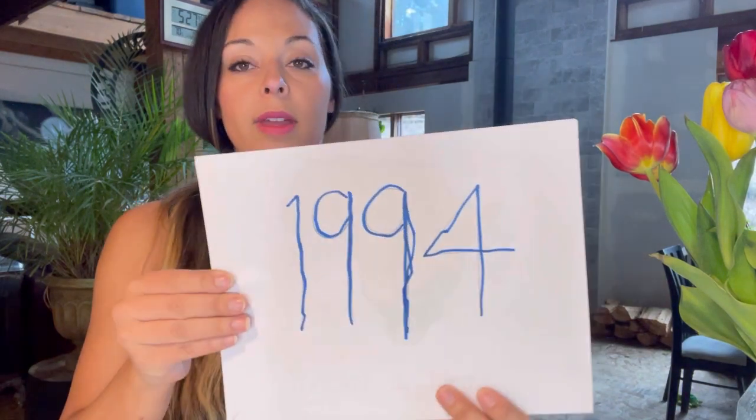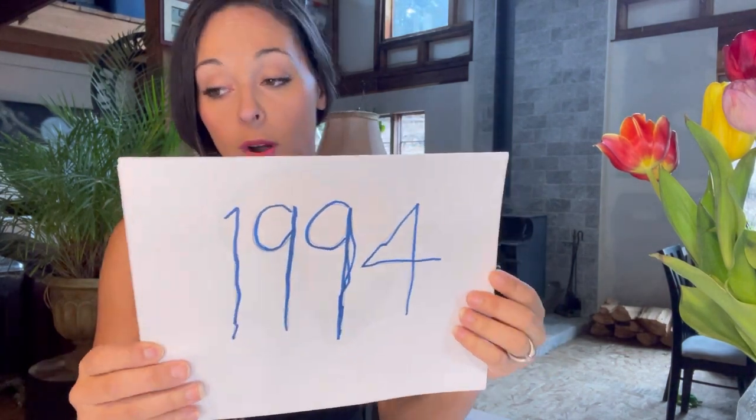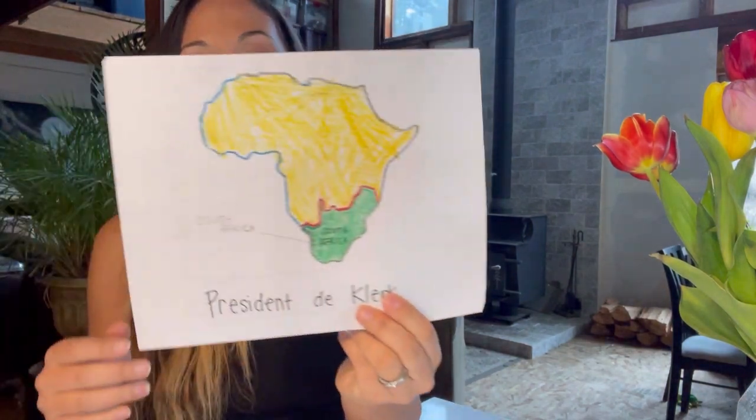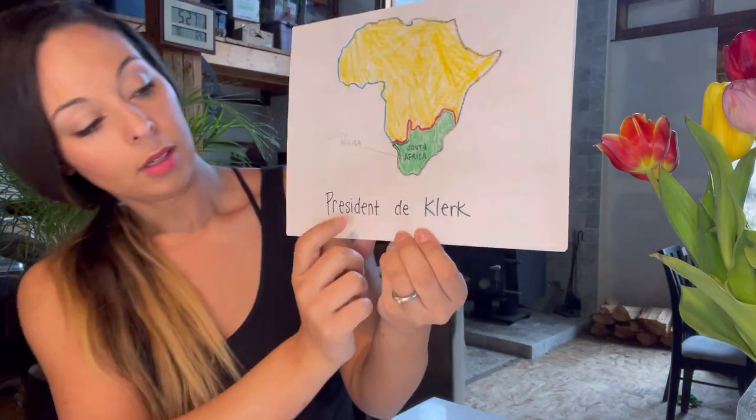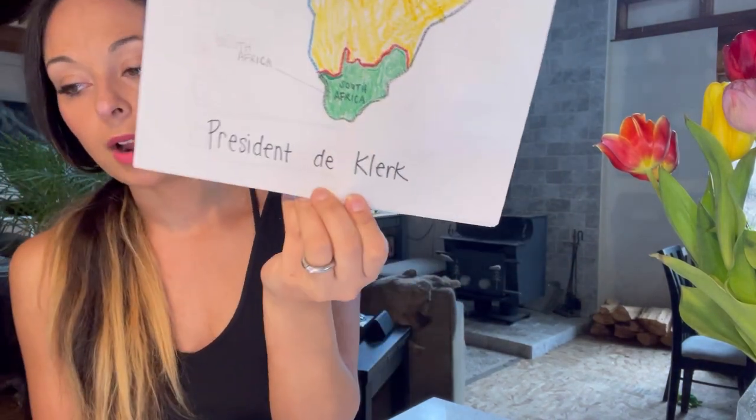For history, we're learning about the end of the apartheid. What I did our first year through is I had my daughter write out some cards that kind of showed what we're talking about with each of these sentences in the history statement, so we could get a visual of it. The first part starts with when this took place — in 1994. You can draw out the year, then draw the map of Africa and highlight the area we're talking about. At that time, the president was President de Klerk, and that's what we talk about in the song.